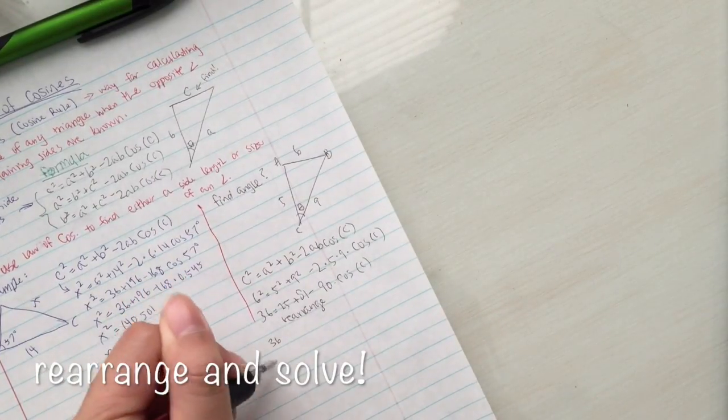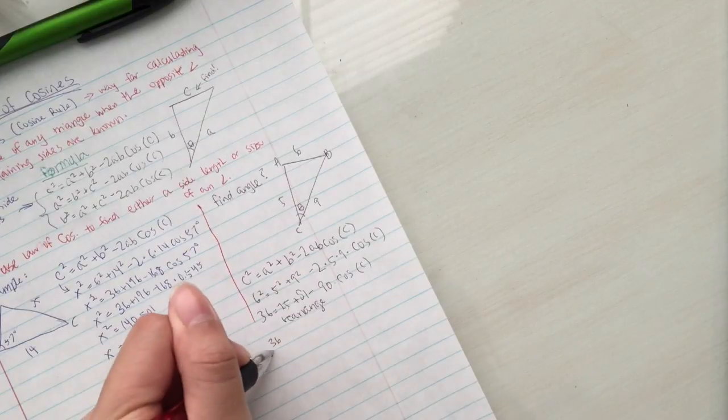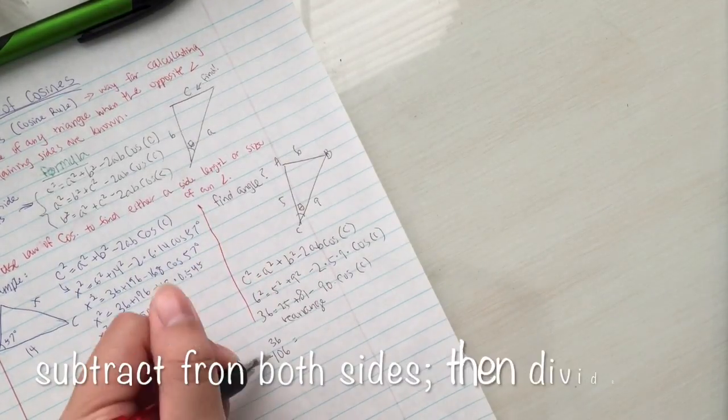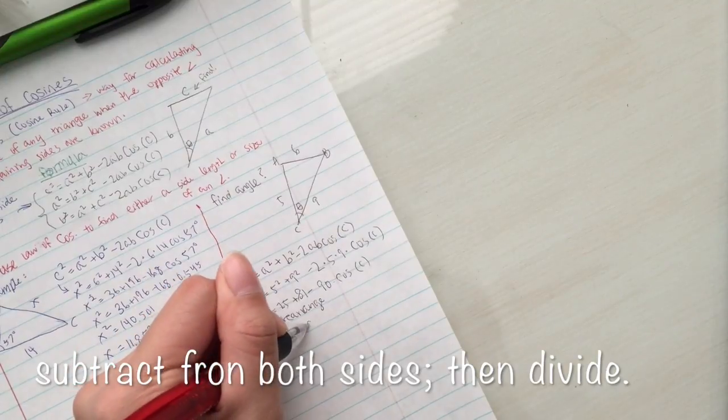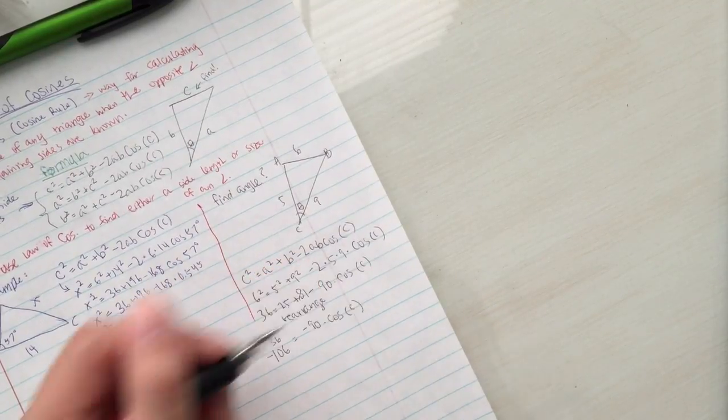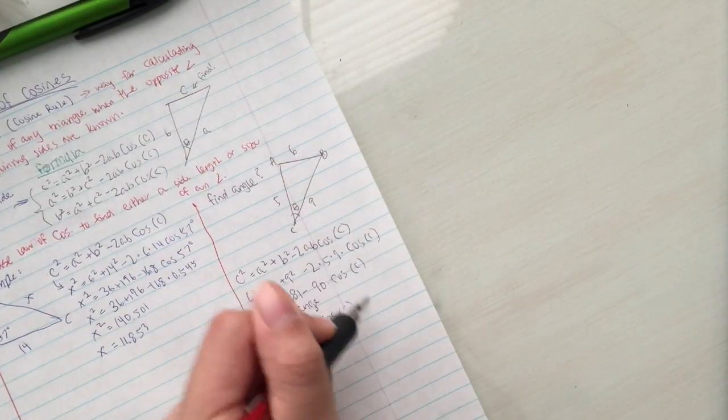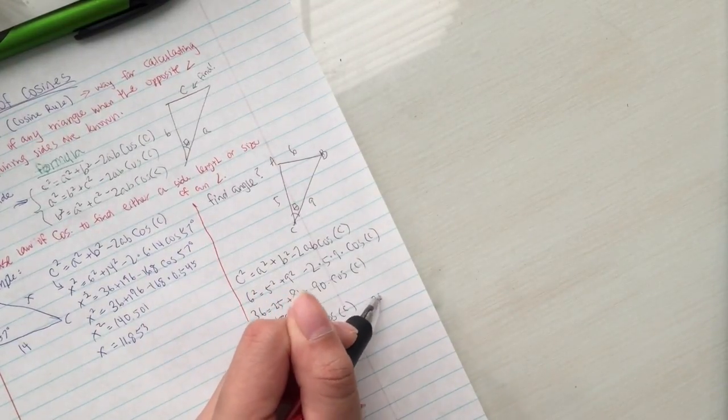If you add 25 plus 81 and subtract it from 36 on the other side, you will get 36 minus 106 equals negative 90 times cosine of c. Thus, you will get negative 70 equals negative 90 times cosine of c...